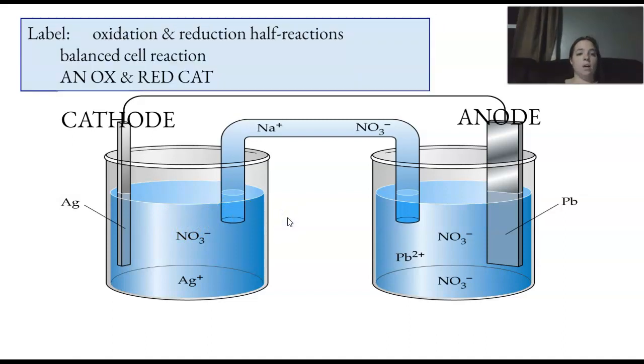Okay. So, let's write out the half reactions and balance. So, anode. Anox. This oxidizes. There's my oxidizing agent. So, it goes from Pb to Pb plus two plus two electrons. This one, red cat, reduces.